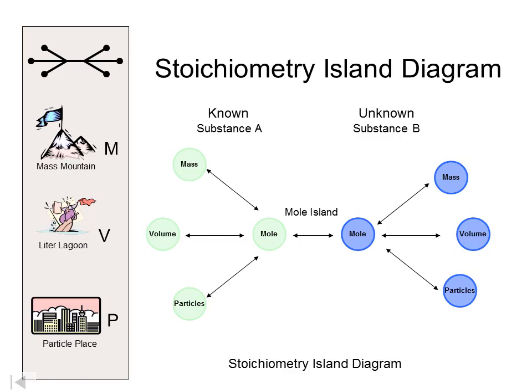This is the overview of the map that I call the Mole Island Diagram. It involves going from one substance, substance A, to substance B — I've colored them a greenish-blue and a darker blue. We have three different locations or fingers. I sometimes refer to this as the little dirty birdie feet. We have some points, and up here we have what I call Mass Mountain.